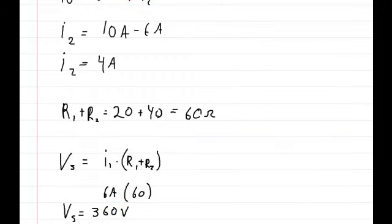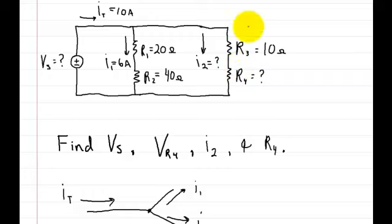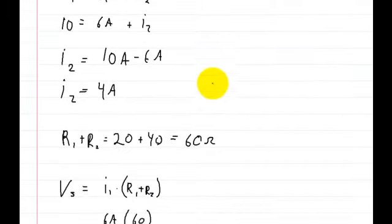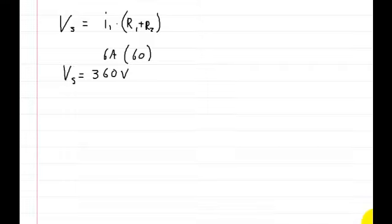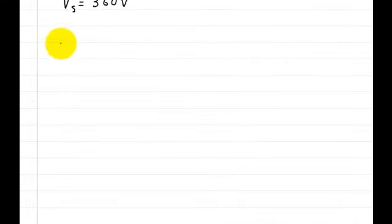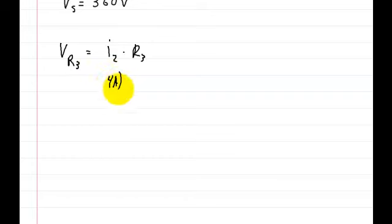So now that we have that, let's continue on and solve for the voltage on this guy right here. We already know what the current coming through here is, so let's just use that. So the voltage on R3 is equal to the current in the second branch, or I2, times R3. So here we know that I2 is equal to 4 amps, and we know that the resistance R3 is equal to 10 ohms. So the voltage on R3 is equal to 40 volts.